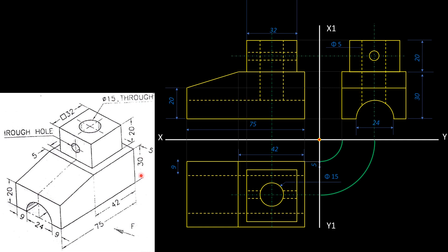Now we have the top view. In the top view, we have a rectangular base: 75mm × 42mm, since 9 + 9 + 24 = 42mm. This 42×75 rectangle forms the base. We then plot the center of the 32mm square on the top view.